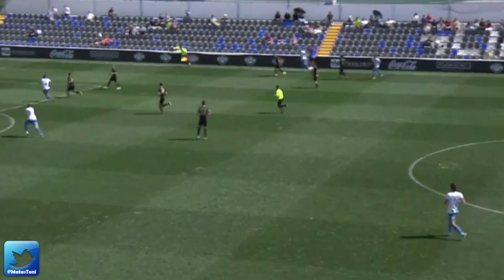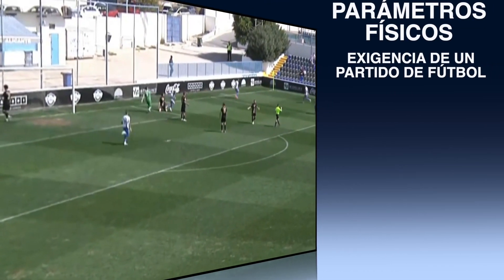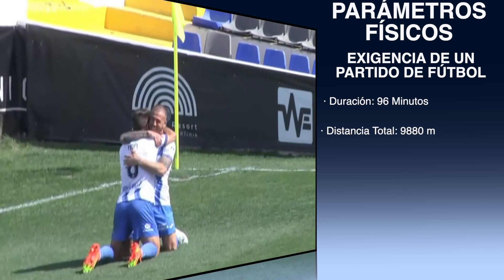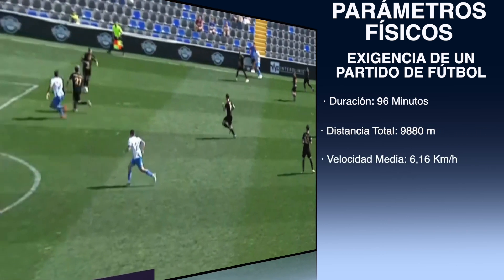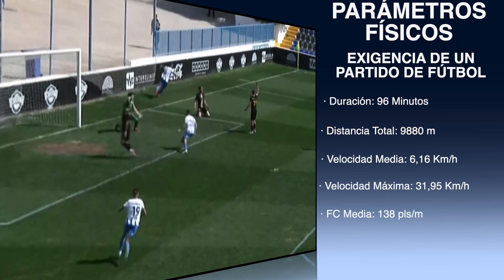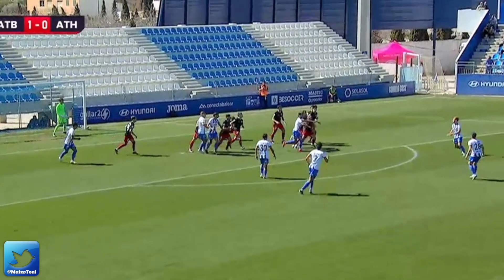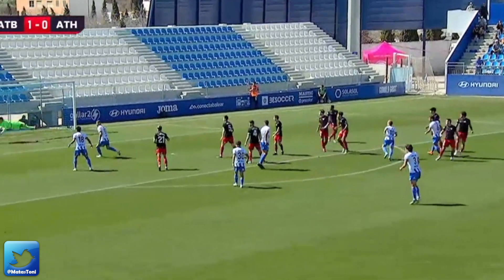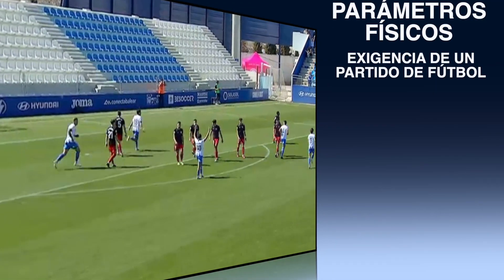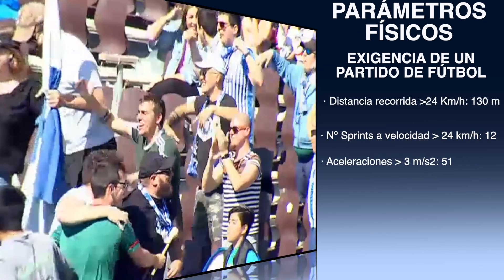Una vez vistos los principales parámetros, estamos en disposición de diseñar un perfil de la exigencia física de un partido de primera RFEF, en el que el futbolista debería recorrer 9,8 kilómetros en 96 minutos, promediando una velocidad media de 6,16 km/h y una frecuencia cardíaca media de 138 pulsaciones por minuto durante todo el partido. Además, el futbolista debe estar preparado para realizar 12 sprints durante el partido, en los que recorrerá 130 metros a velocidades superiores a los 24 km/h.